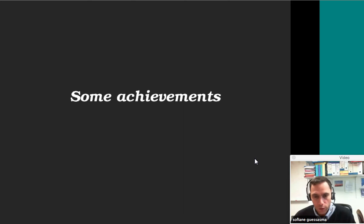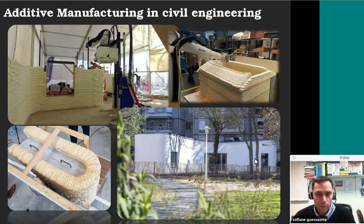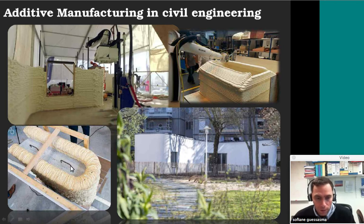Now I'm going to show you some snapshots of basic achievements in the area of additive manufacturing, starting with an example here. This is a house that was built using a 3D printer at the largest scale. Actually, the printer was not used for printing the concrete itself, but the mold that is used to make more complex shapes.